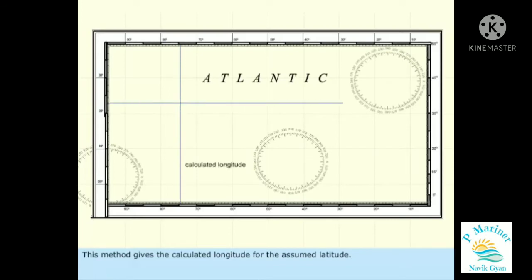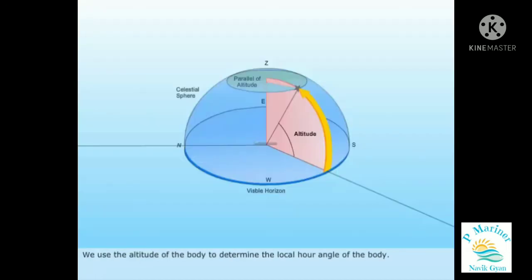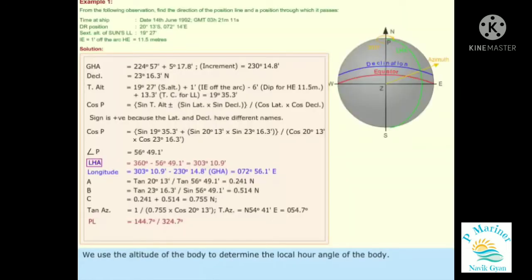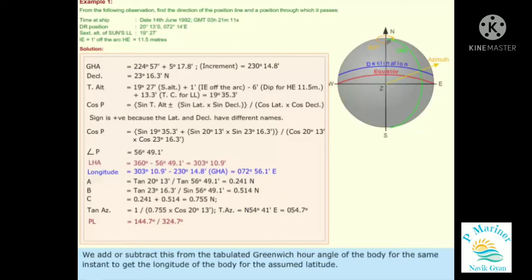This method gives the calculated longitude for the assumed latitude. We use the altitude of the body to determine the local hour angle of the body. We add or subtract this from the tabulated Greenwich hour angle of the body for the same instant to get the longitude of the body for the assumed latitude.